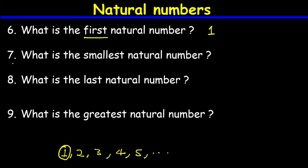Question number seven: what is the smallest natural number? As we move from left to right, natural numbers are increasing: 2 is greater than 1, 3 is greater than 2, 4 is greater than 3, 5 is greater than 4, and so on. Therefore the smallest natural number is 1, and all other natural numbers are greater than 1.